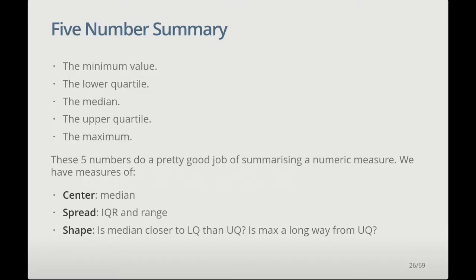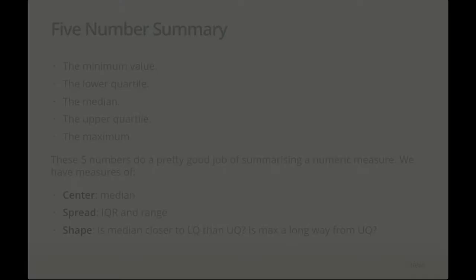Non-robust measures such as the mean are affected by large values. When you have outliers in your data, it pays to redo any analyses both with and without those values so you can see if they're influencing things too much. The five-number summary brings together: the median (a measure of center), the lower and upper quartiles, and the minimum and maximum. Those five numbers do a pretty good job of summarizing a numeric measure, because we have measures of center, spread (range and interquartile range), and also a measure of shape — we can tell what the shape of the distribution is just using these five numbers, particularly if we display them graphically in a box plot.